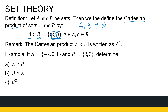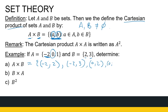Let's look at an example. Set A is {minus 2, 0, 1} and set B is {2, 3}. Their Cartesian product A × B is a set of ordered pairs where the first entry comes from A and the second from B: (minus 2, 2), (minus 2, 3), (0, 2), (0, 3), (1, 2), (1, 3). It's all the combinations of ordered pairs where the first element comes from A and the second from B.